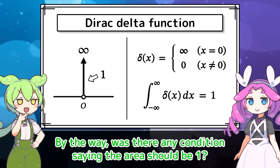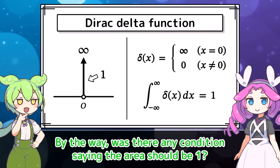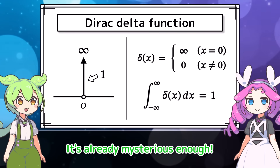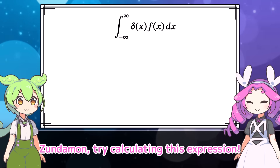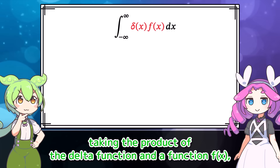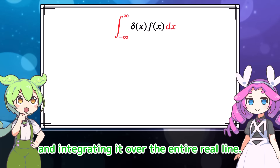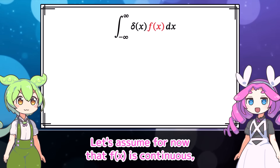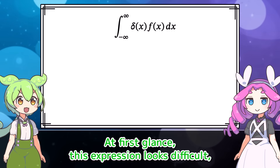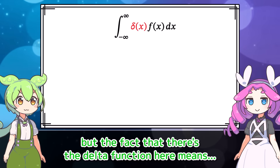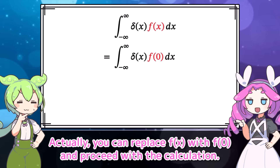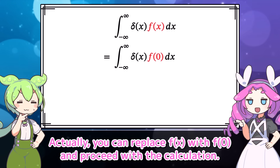I didn't know that. By the way, was there any condition saying the area should be 1? Let's set that aside. Actually, this function has a mysterious property. Try calculating this expression: taking the product of the delta function and the function f of x, and integrating it over the entire real line. Let's assume for now that f of x is continuous. At first glance, this expression looks difficult, but the fact that there's the delta function here means... what could it mean? Let me give you a hint.